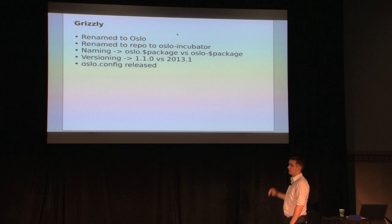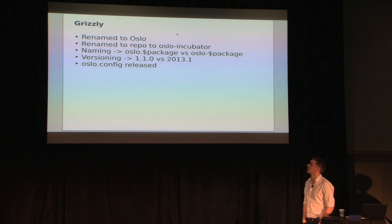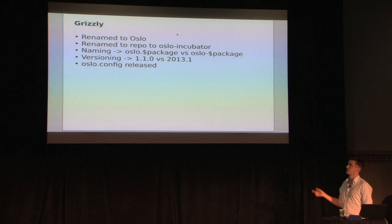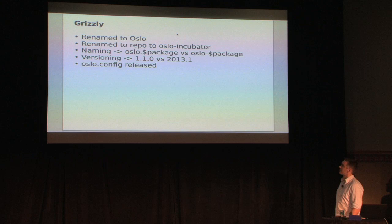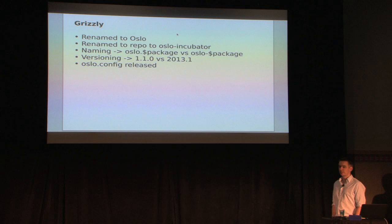In Grizzly, in Folsom we were calling this project OpenStack-common, and we renamed it to Oslo because we like our code names. We renamed the repository from OpenStack-common to Oslo Incubator to reinforce the message that this repository is a stepping stone for APIs as they're being evolved. We settled on a debate between hyphen and period separation for the names of these things. We decided on a versioning scheme — rather than the date-based versioning scheme of server releases, we went for semantic-style versioning. And we released our first library package, Oslo.config, which we're very happy with.